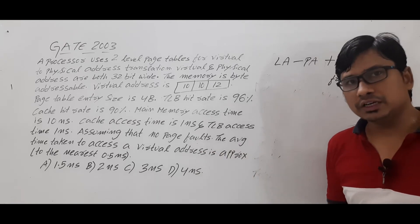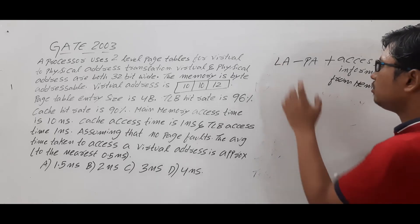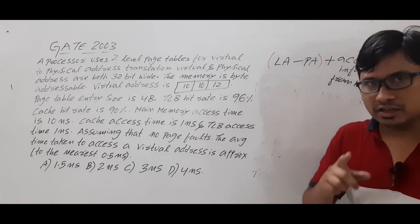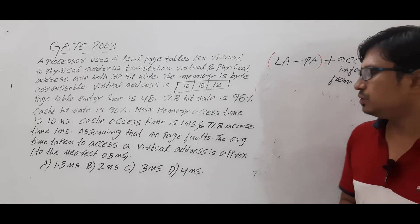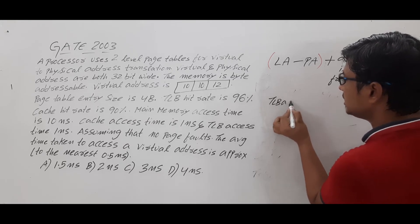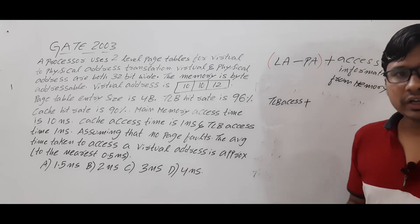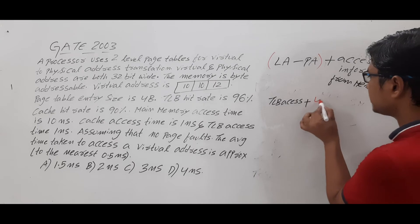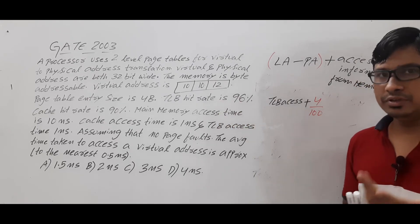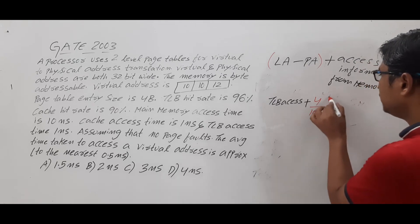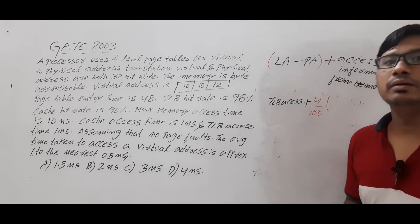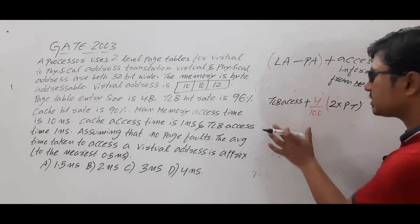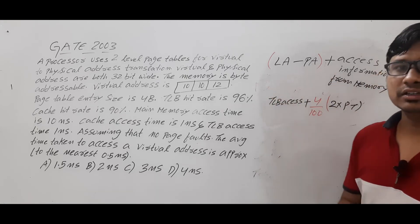First, we find how much time is required to convert the logical address to a physical address. The CPU generates the logical address and we search in the TLB first — this takes TLB access time (1 ns). If the entry is not in the TLB (miss rate = 4%), we must access the two-level page table in main memory, which takes 2 × main memory access time (2 × 10 ns). So address translation time = TLB access time + (4/100) × 2 × page table access time.